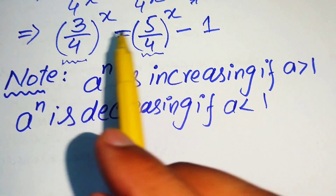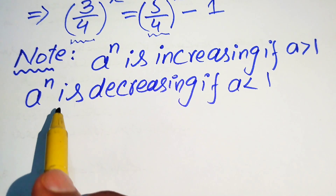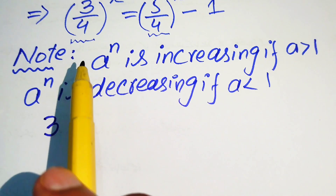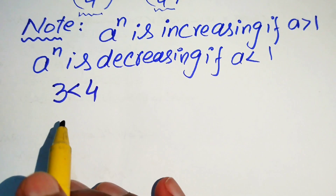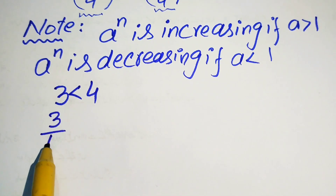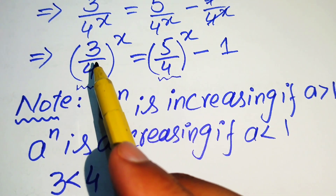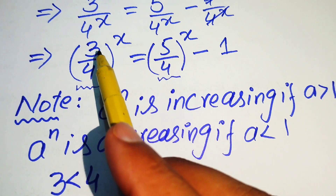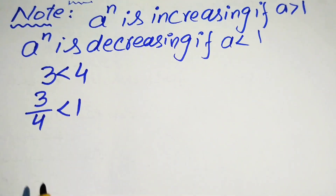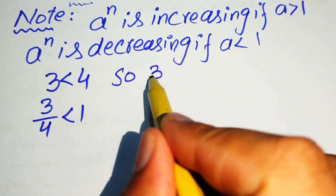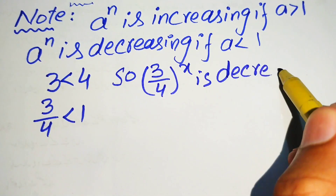Now we focus on the left hand side term (3/4)^x. Since 3 is less than 4, we have 3 over 4 is less than 1. Therefore, (3/4)^x is a decreasing function because its base is less than 1.